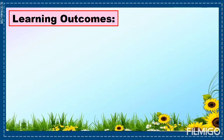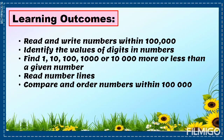Before we start our lesson today, I will tell you the learning outcomes for this lesson. First, students should know how to read and write numbers within 100,000. Second, students should know how to identify the values of digits in numbers. Third, students should know how to find 1, 10, 100, 1,000, or 10,000 more or less than a given number. Fourth, students should know how to read number lines and how to compare and order numbers within 100,000.